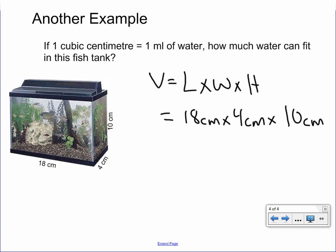So let's go ahead and put this into our calculator. So we have 18 times 4 times 10 equals 720. 720 and our units again for this one so far is centimeters cubed. But it's asking us to do it in milliliters. But since it's a one-to-one ratio, all we have to do for our answer is just switch our centimeters cubed to milliliters.